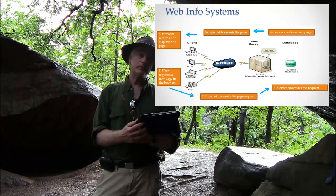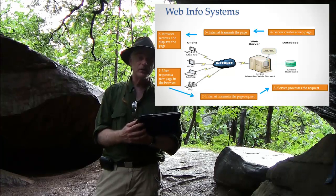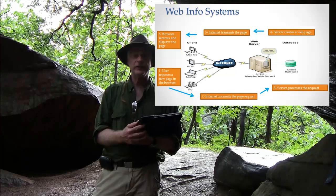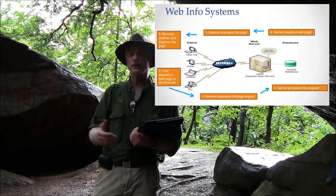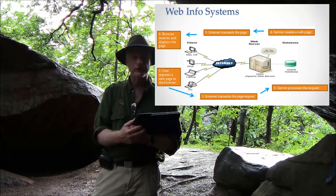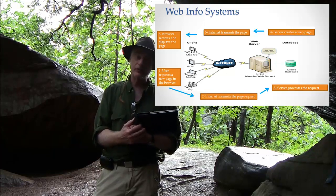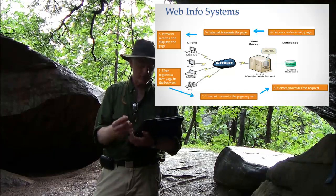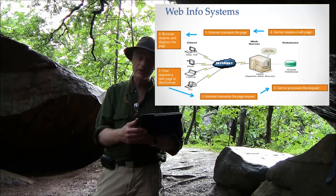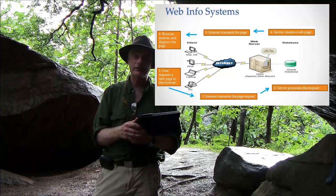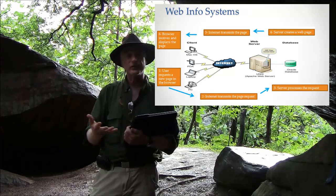A page request could be really simple — just "show me this one web page" — or it could be really complicated, like "compute my taxes from the last 15 years and tell me how much I overpaid." That might be a huge, long calculation, and it's still a request made against the server. The server then processes the request, and how much processing depends on how complicated it is.